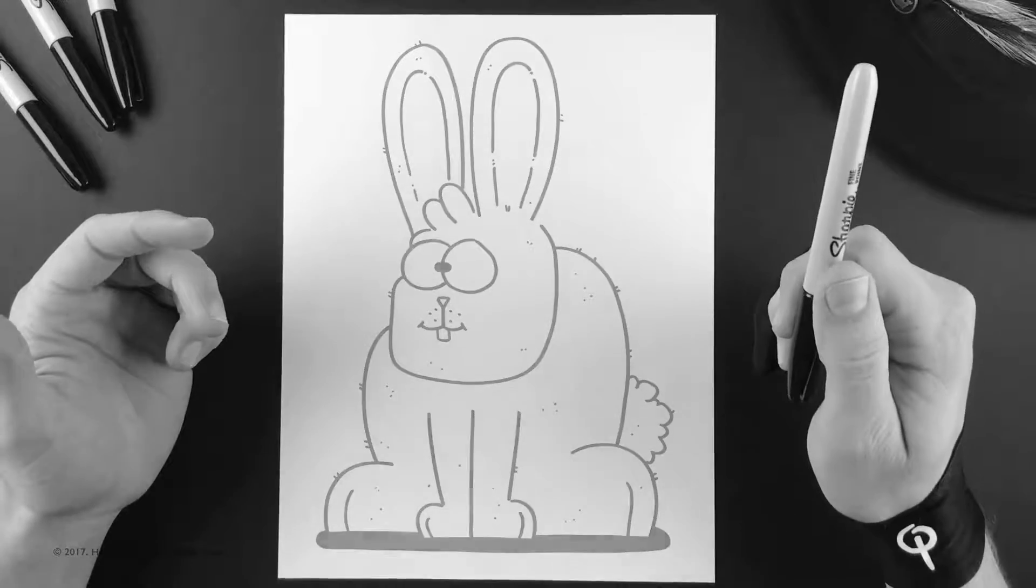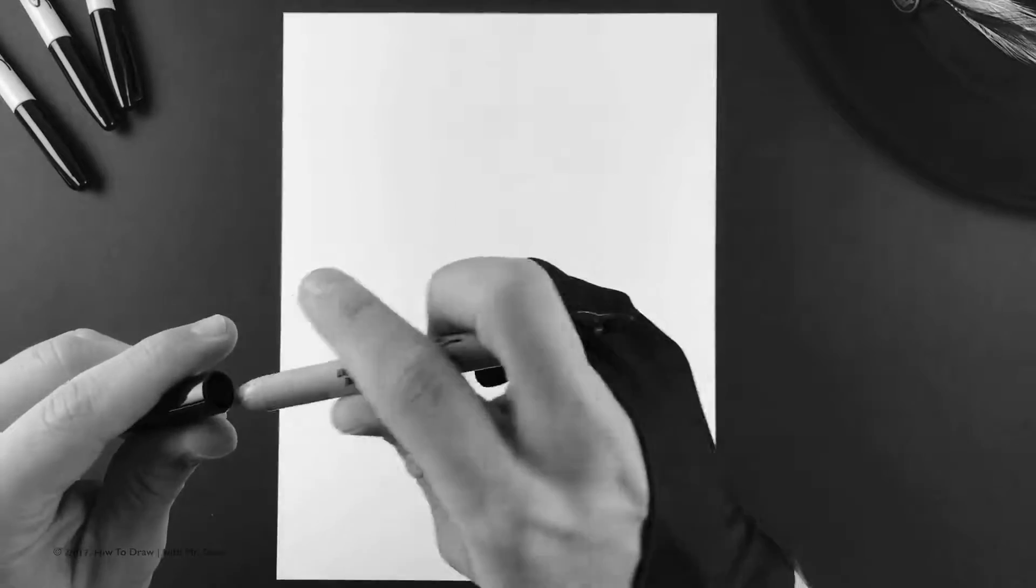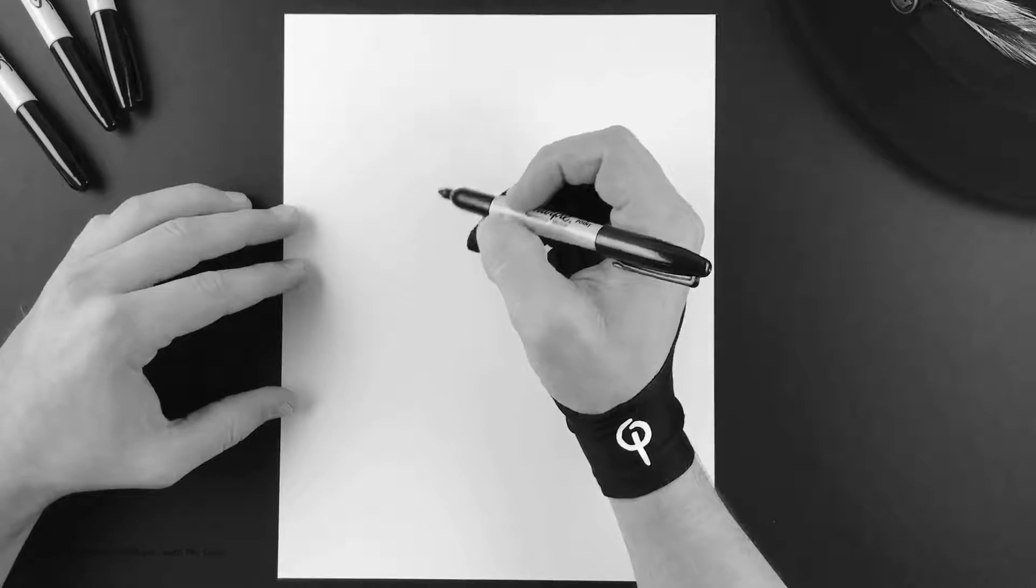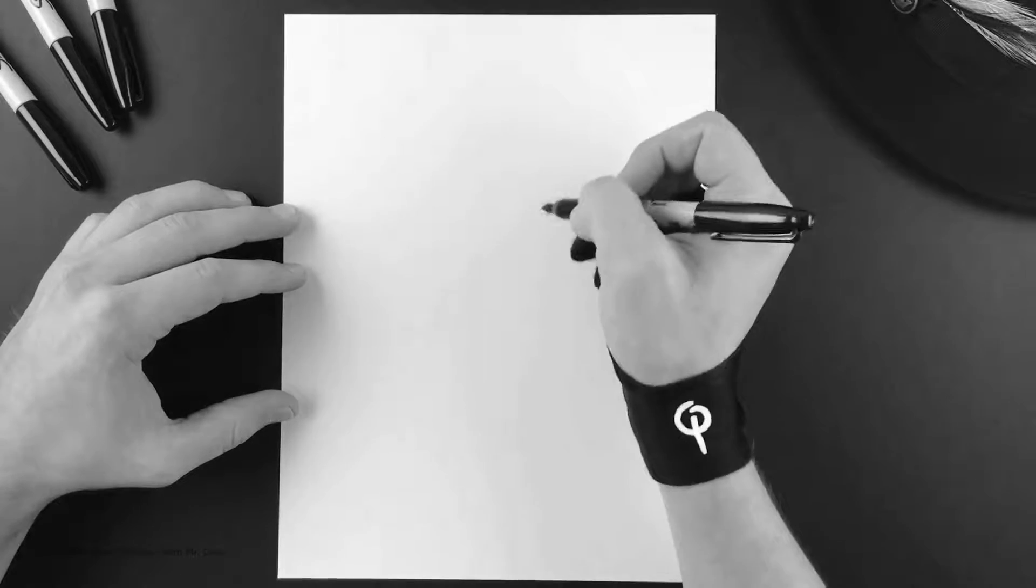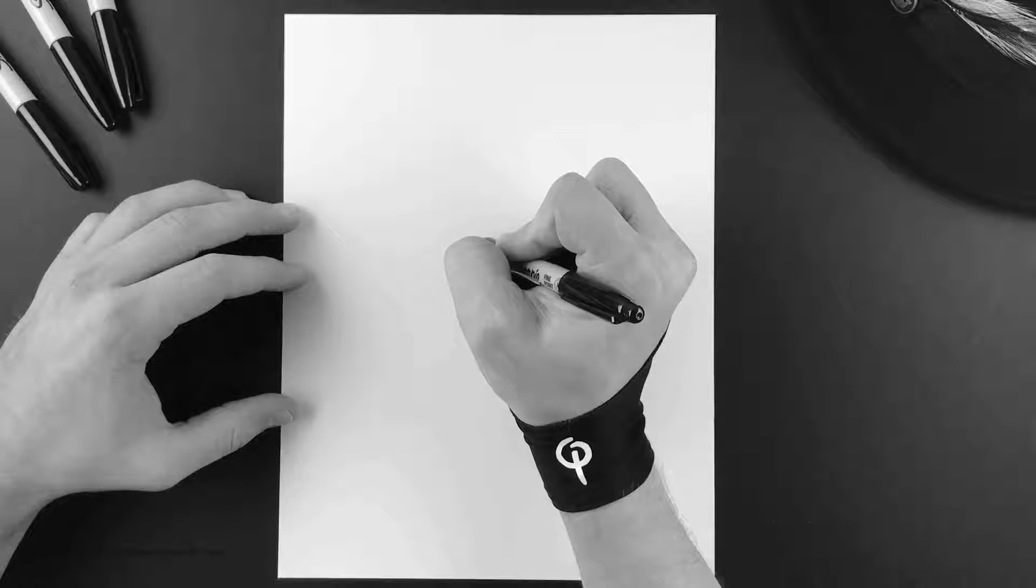You want to do it close to the center of the paper because he's gonna have big floppy ears. So do our first circle just like this.